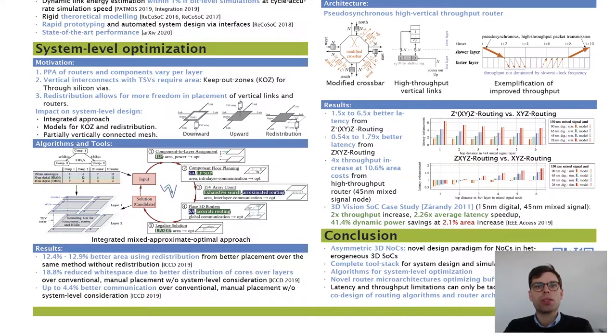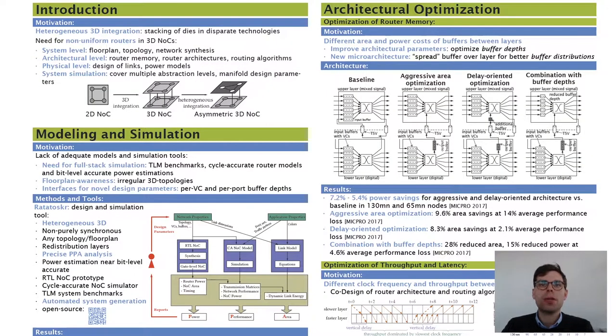As the core results, we found that we can improve area by up to 12.9% using redistribution at system level, we can improve white space by up to 18.8%, and it is also possible to improve communication.